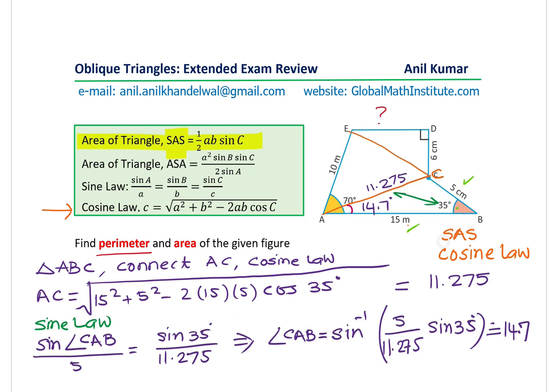Now in this case, we had side angle side. We could use cosine law to find the third side. Once we find the third side, it's a good idea to use sine law, calculate the angles. Once you have the angle, continue the process. And what we saw here is that we started from here, landed this side, ended all the calculations, getting perimeter as well as area.